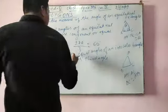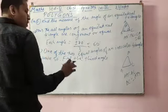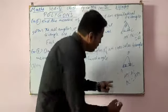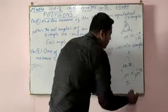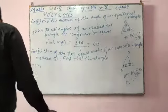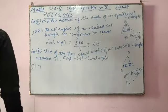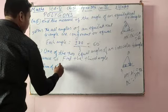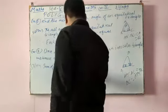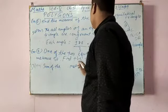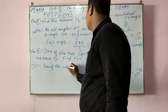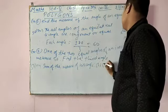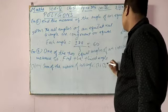The question is: one of the two equal angles of an isosceles triangle is 50 degrees. It means if one angle is 50 degrees, the other equal angle will also be 50 degrees, because if two sides are equal, the angles are also equal. So the sum of the measure of two angles is 50 plus 50 equals 100 degrees.